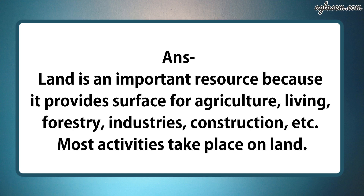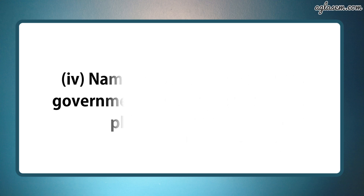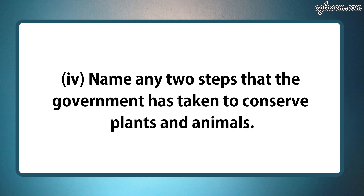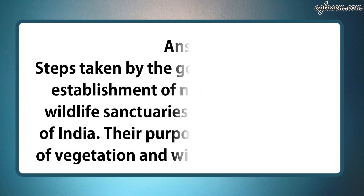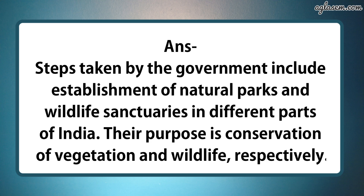Moving to our fourth part which says, name any two steps that the government has taken to conserve plants and animals. So the answer is, steps taken by the government include establishment of national parks and wildlife sanctuaries in different parts of India. Their purpose is conservation of vegetation and wildlife respectively.